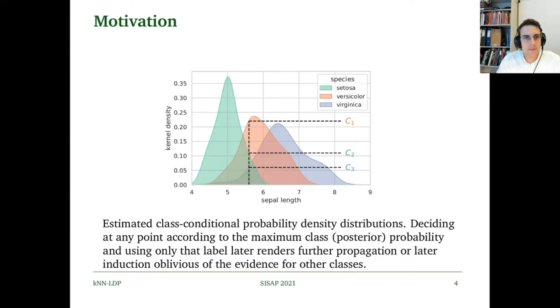Our motivation has been to make a simple probabilistic label propagation model where we propagate label probability distributions instead of crisp labels. As we can see in this figure, we have three classes, one attribute, and an estimated class-conditional probability density distribution.